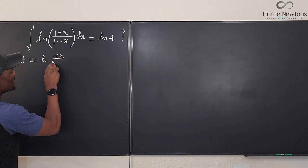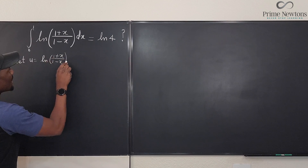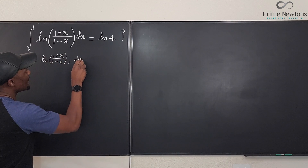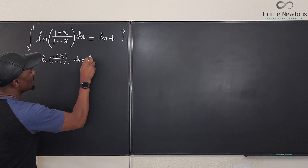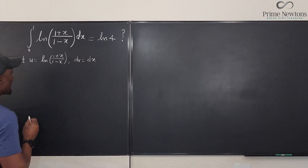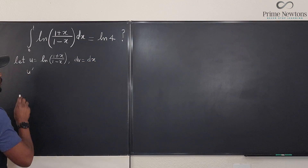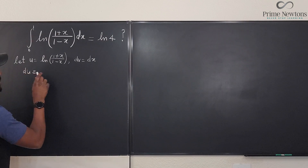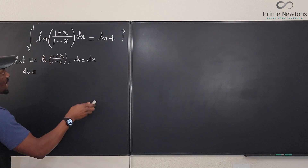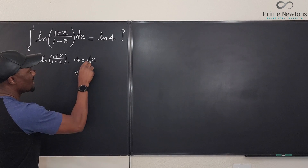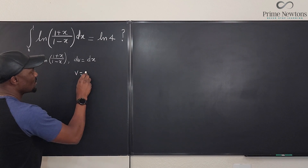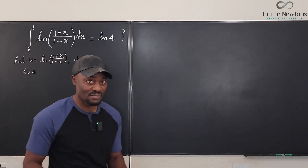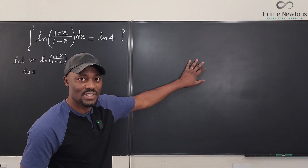Let dv equal dx, so that du will be the derivative of u and v will be the integral of dx, which is just x. So what will du be? That's all I'm looking for now.